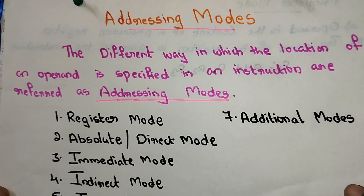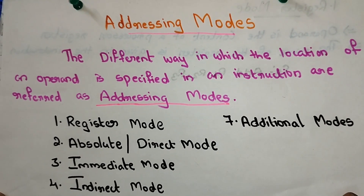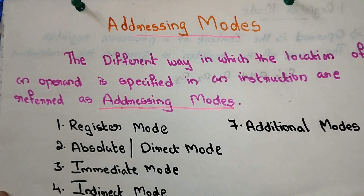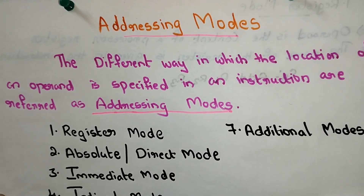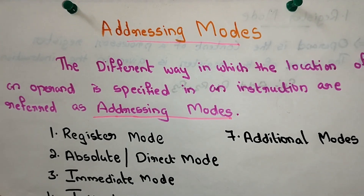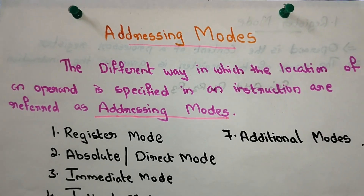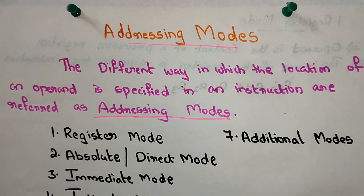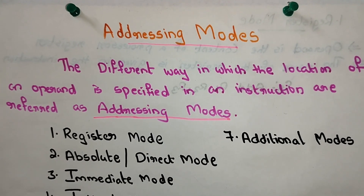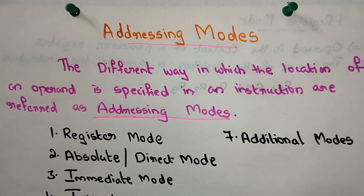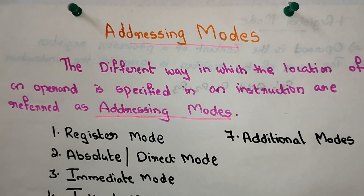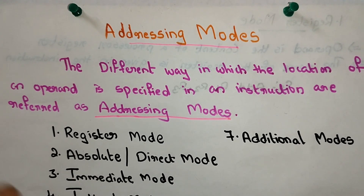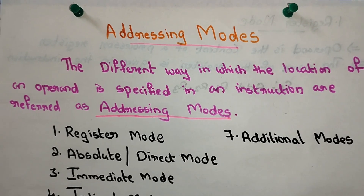Welcome back to our channel. In our class, we are learning the best structure of Module 1. This Module 1 CO is an important topic of addressing modes. Addressing modes is an important topic because in part B, we will talk about addressing modes and their types. So, what are addressing modes?